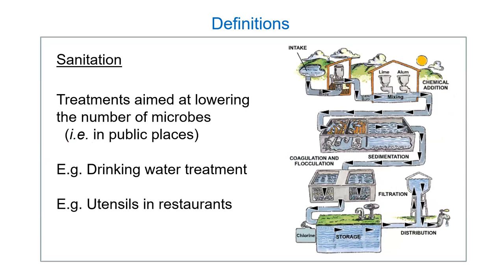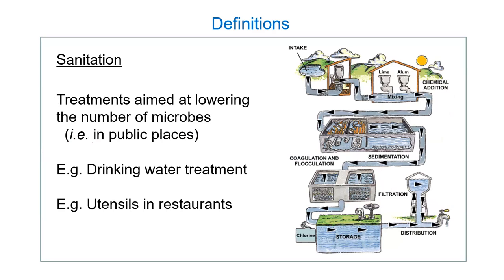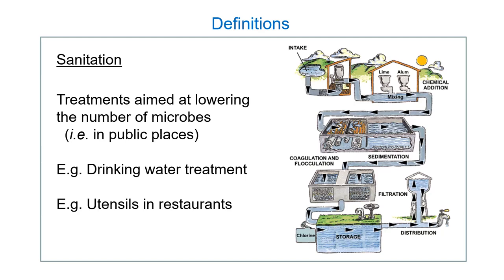Sanitation is more of a public health term used for reducing the number of microbes — there's not usually a guarantee that they're all gone. If somebody is serving you food at a restaurant, you're hoping they're not handling it with their fingers, maybe using tongs. That's more sanitary because it reduces microbe transfer. If somebody is double-dipping, that is not sanitary.